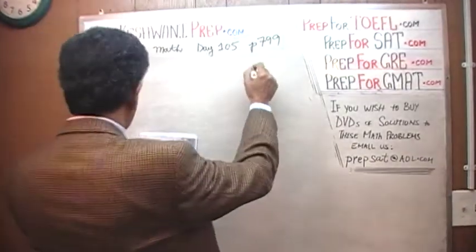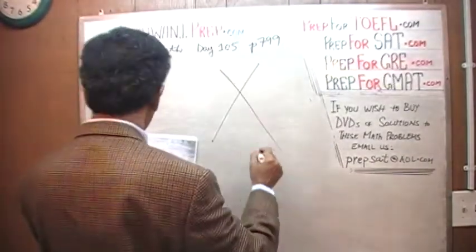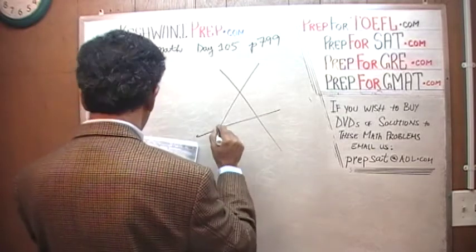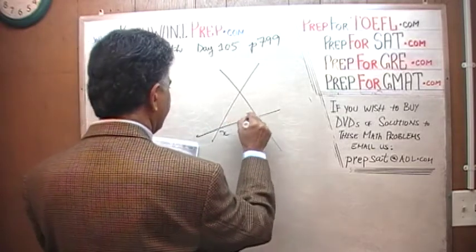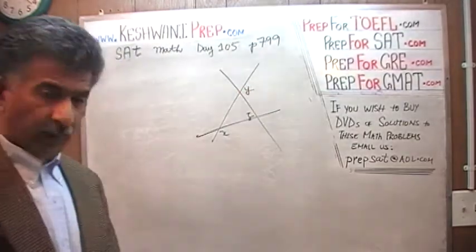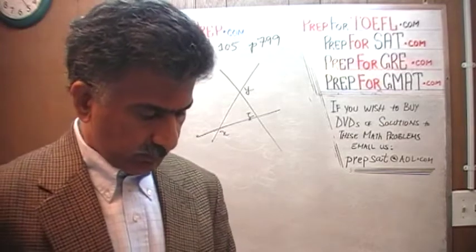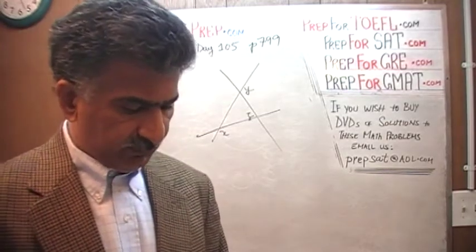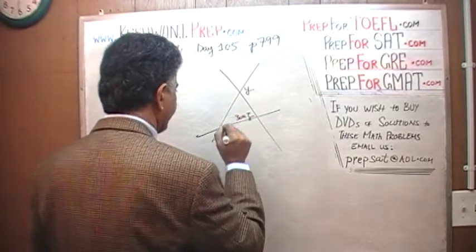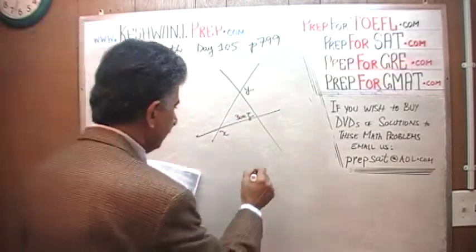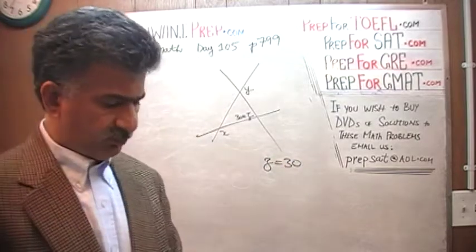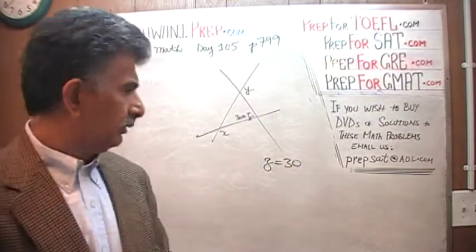We have three lines here. This is X, this is Z, and this is Y. The picture is not drawn to scale. In the problem, Z is 30, so angle Z equals 30. What's the value of X plus Y?